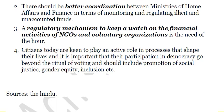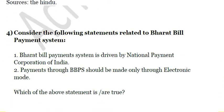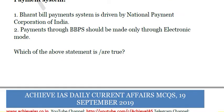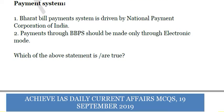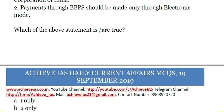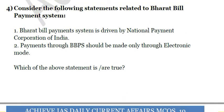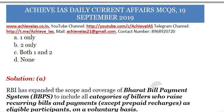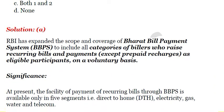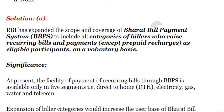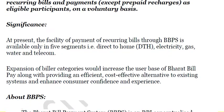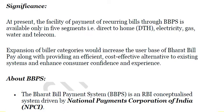Next question: consider the following statements related to Bharat Bill Payment System. First, Bharat Bill Payment System is driven by the National Payments Corporation of India. Second, payments through Bharat Bill Payment System should be made only through electronic mode. Which of the above statements is correct? Only the first statement is correct. The RBI has expanded the scope and coverage of Bharat Bill Payment System to include all categories of billers who raise recurring bills and payments, including prepaid recharges, as eligible participants on a voluntary basis. Currently the facility of payment through BBPS is available only in five segments: direct-to-home, electricity, gas, water, and telecom.